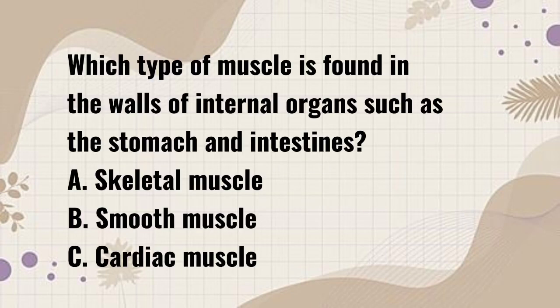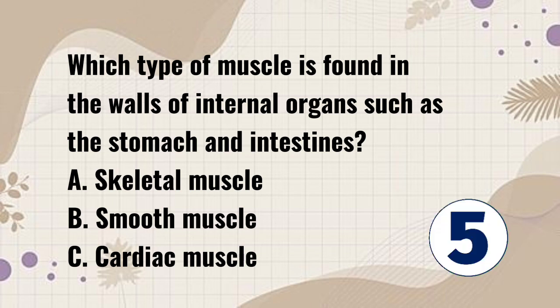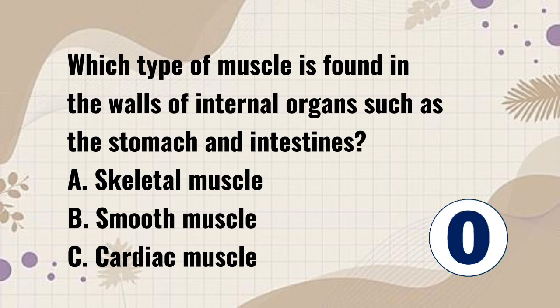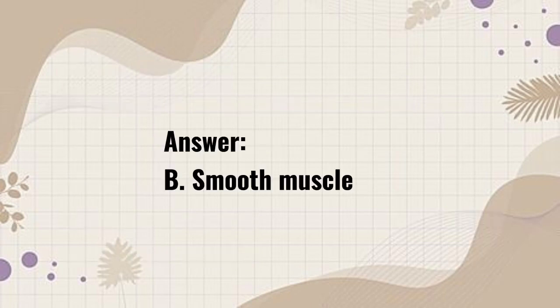Which type of muscle is found in the walls of internal organs such as the stomach and intestines? A. Skeletal muscle. B. Smooth muscle. C. Cardiac muscle. Answer: B. Smooth muscle.